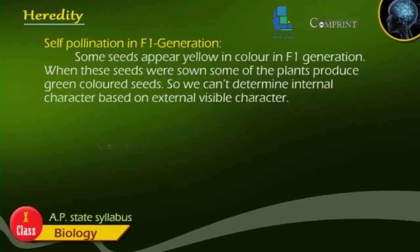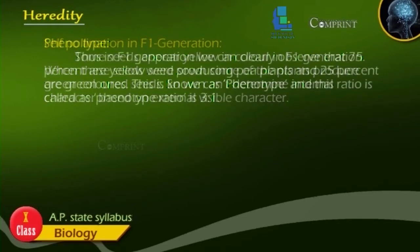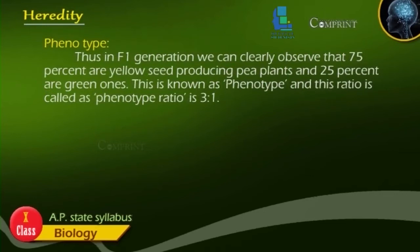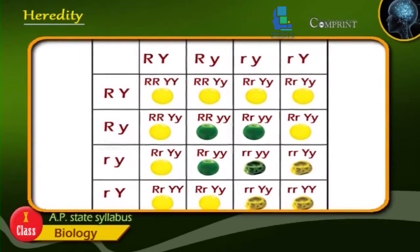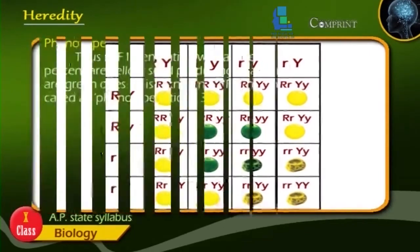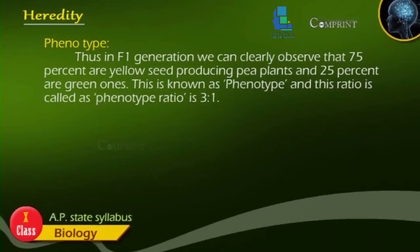Some seeds appear yellow in color in the F1 generation. When these seeds were sown, some of the plants produced green colored seeds. So we cannot determine internal character based on external visible character. In the F2 generation, we can clearly observe that 75% are yellow seed-producing pea plants and 25% are green. This is known as phenotype, and this ratio is called the phenotype ratio of 3:1.